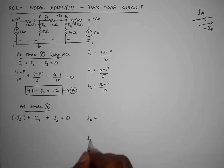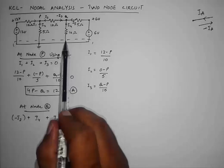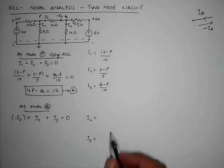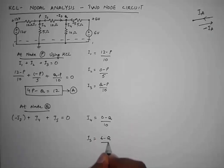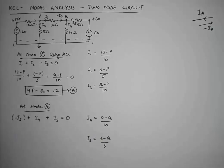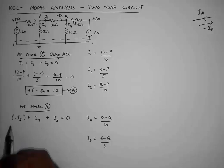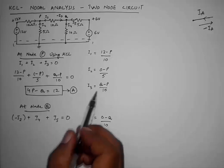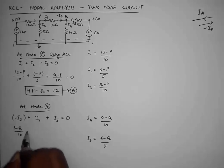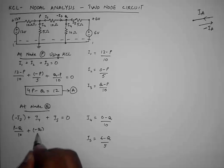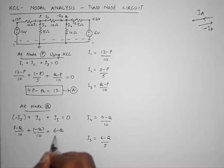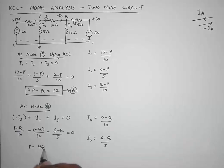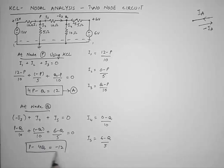The values of I4 and I5 are found similarly: I4 = (0 − Q) / 10 Ω, and I5 = (6 − Q) / 5 Ω. Substituting into the KCL equation at node Q: −(Q − P)/10 + (−Q)/10 + (6 − Q)/5 = 0. Solving this gives us: P − 4Q = −12. This is Equation B.